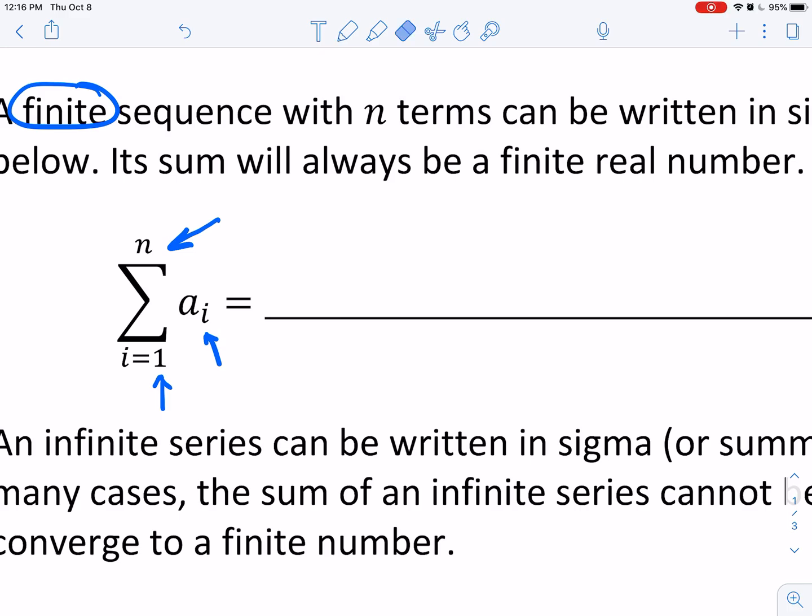So what we have in this case is a_1 plus a_2 plus a_3 plus, and then we would keep going until we get to the term that came right before the nth term, which is the n minus 1 term, and then we would plug in the nth term, and then we're done.